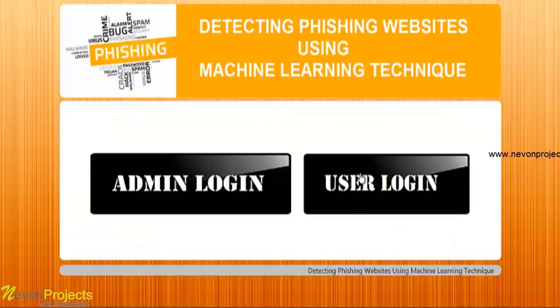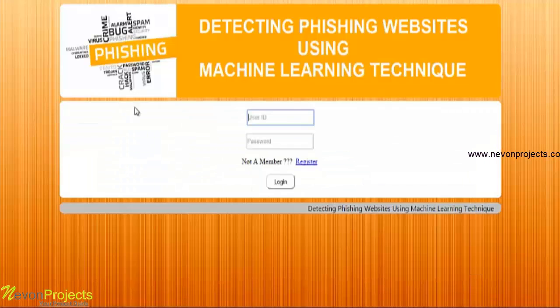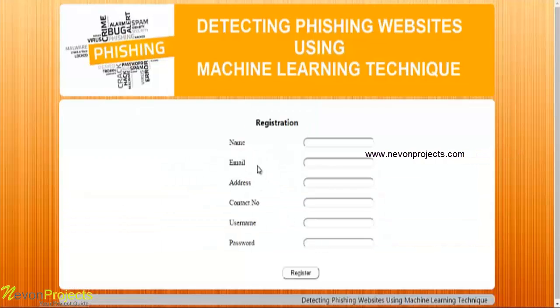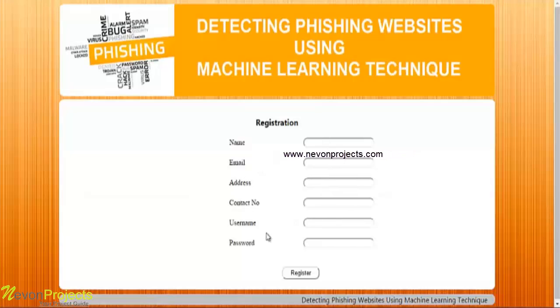Let's see the next module, that is user login. If the user is a new member, he can register by clicking the register link button. He must specify his personal details: name, email, ID, address, and contact number.